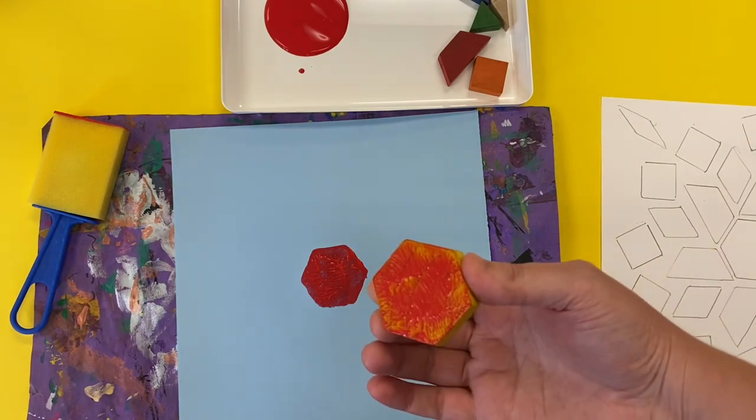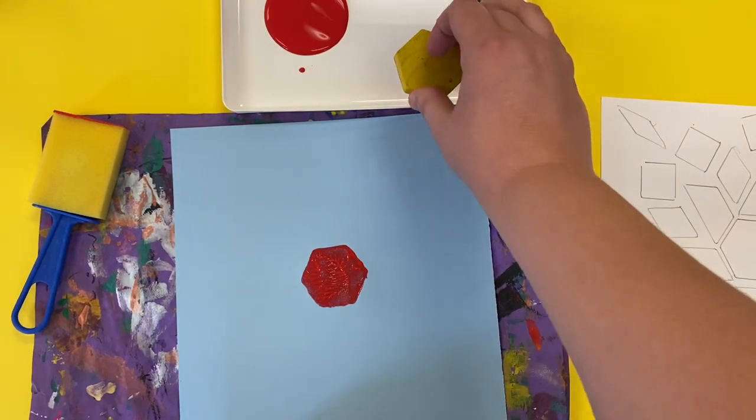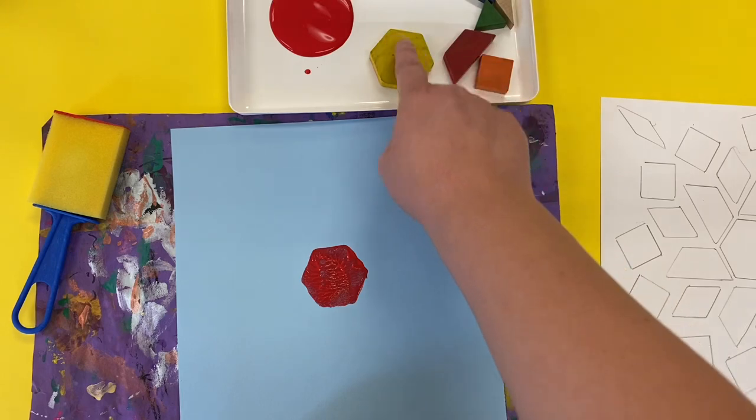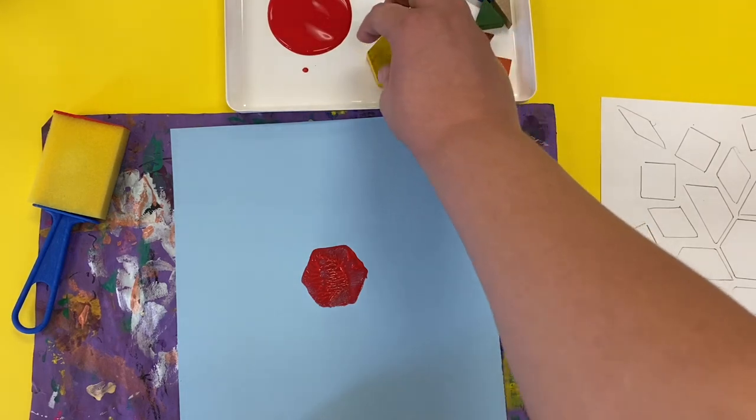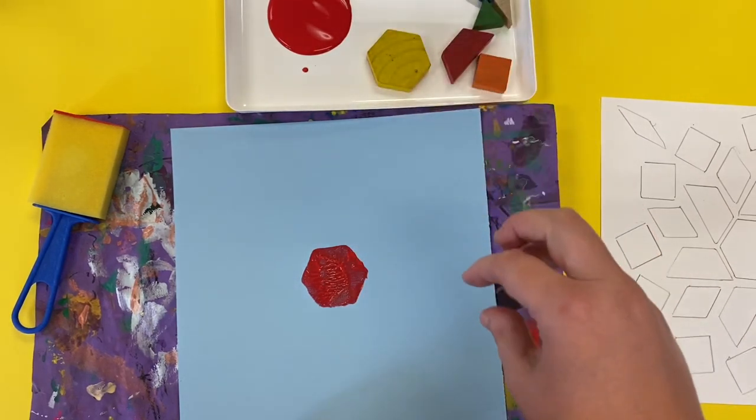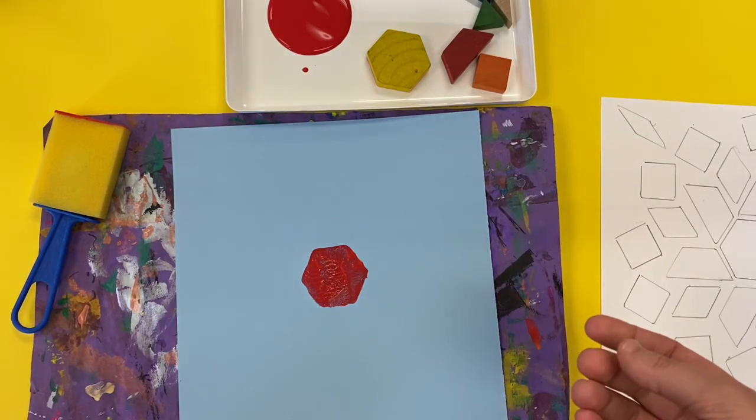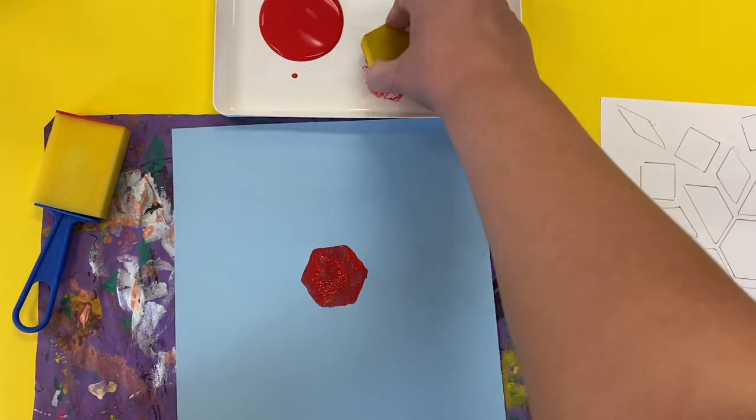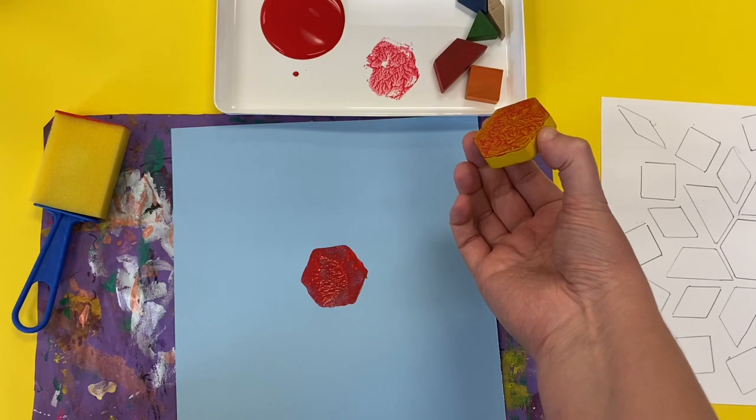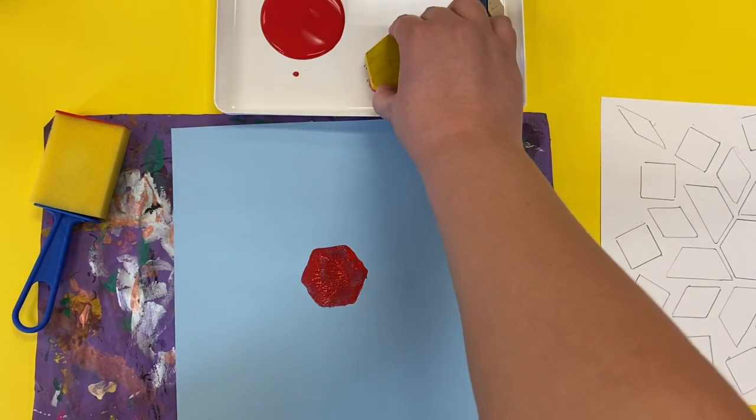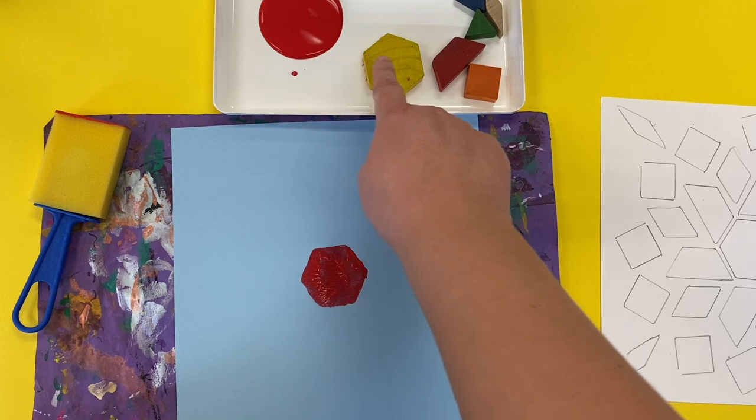When you are done using a shape, you're going to put it with the paint side facing down on your tray because we don't want to get paint on the top because that's the side that we're picking up and we don't want to get paint all over our fingers. So your tray is going to get messy over here with paint and that's okay because there's only one color for each tray.